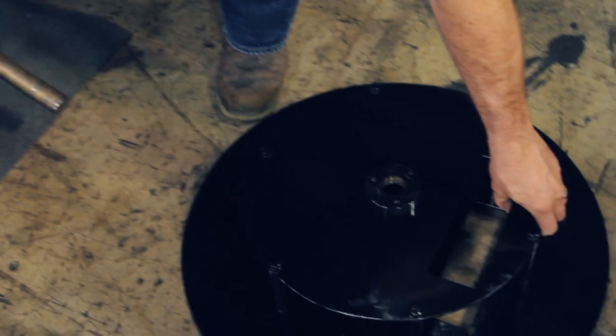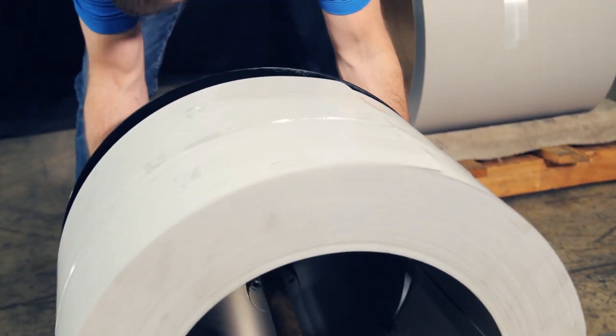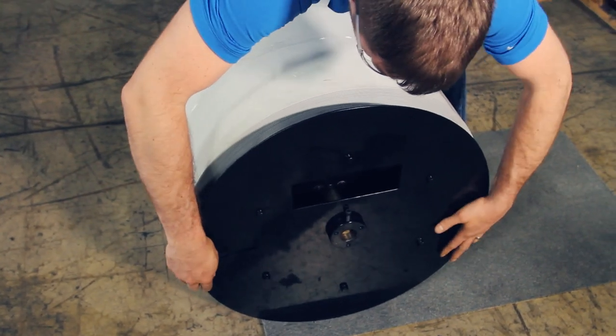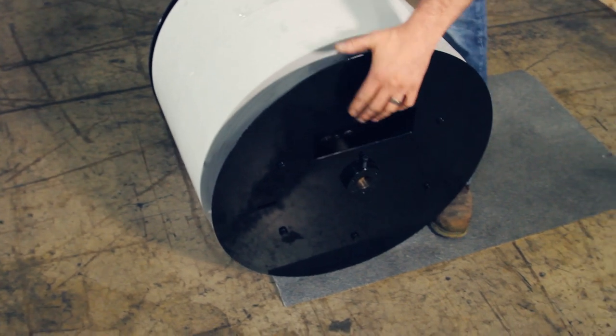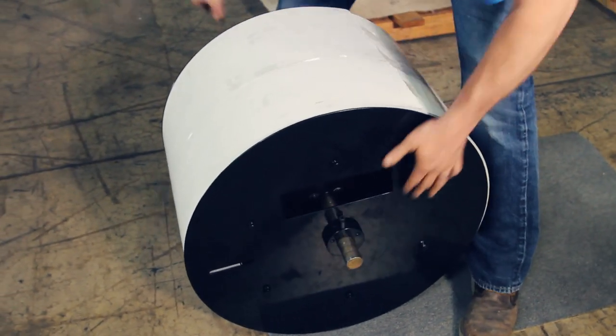Then you're going to take the fixed side of the reel and the shaft and insert it into the coil. Then slide the movable side of the reel onto the shaft. You want to capture the coil so both halves of the reel are touching the edge of the material.